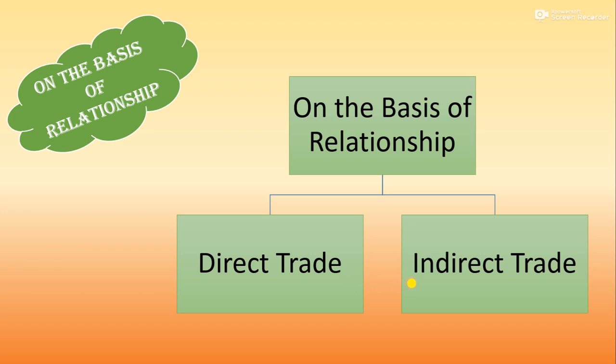On the basis of relationship, internal trade can be divided into two categories: direct trade and indirect trade. Direct trade kya hai? Jab producer direct consumer ko goods sale kar deta hai, beech mein koi bhi middleman nahi aa raha, to this trade is called direct trade. Producer ne goods produce ki aur direct consumer ko de di — to woh direct trade hoga.